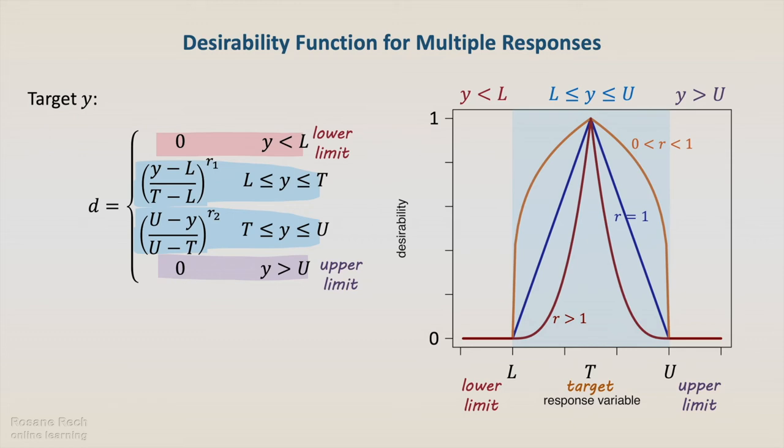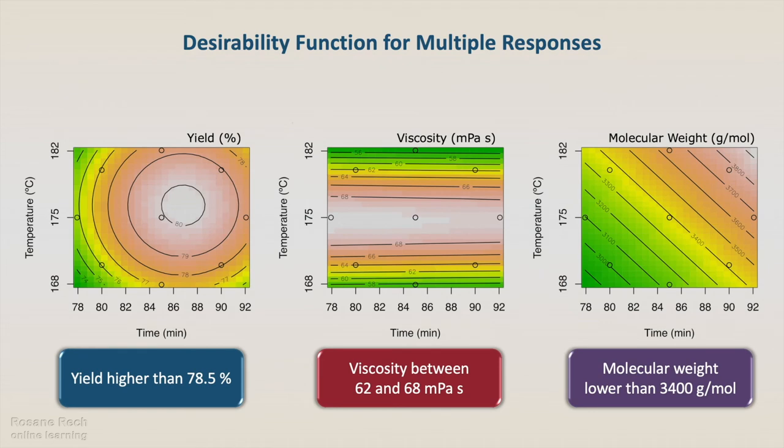Let's now apply it to our example. The aim is to have yield higher than 78.5%, viscosity between 62 and 68 mPa second, and molecular weight lower than 3400 grams per mole.